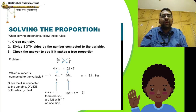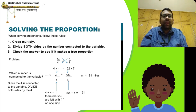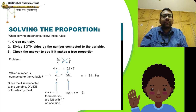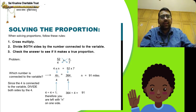Why divide by 4? We have to divide both sides by the number attached to the variable. The variable here is n, and 4 is attached to n. So we divide both sides by 4: 4/4 cancels, and n equals 364 by 4, which is 91. So the value of n is 91.